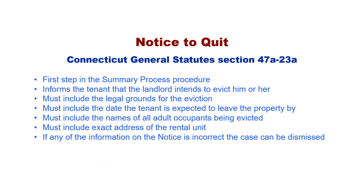Notice to Quit. Connecticut General Statutes Section 47A-23A discusses the notice to quit. The notice to quit is usually the first step in the summary process procedure. It informs the tenant that the landlord plans to evict, states the grounds for doing so, and the date by which the tenant is expected to leave the property. The notice to quit should include the names of all adult occupants the landlord is seeking to remove from the rental unit, including adult children. Minor children should not be named. An adult not named in the notice to quit is not part of the action, and you may not be able to evict them.